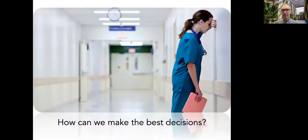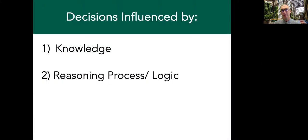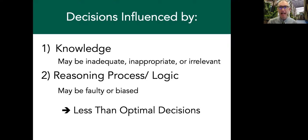How do we make the best decisions? Specifically, how do we avoid making mistakes? Our decisions are influenced by many things, but fundamentally by the knowledge that we hold and by how we put that knowledge together — the reasoning process or logic behind it. Both of these can run into difficulty. Our knowledge may be inadequate, inappropriate, or irrelevant. Our reasoning process or logic may be faulty or biased, and both of these problems together can lead to less than optimal decisions.